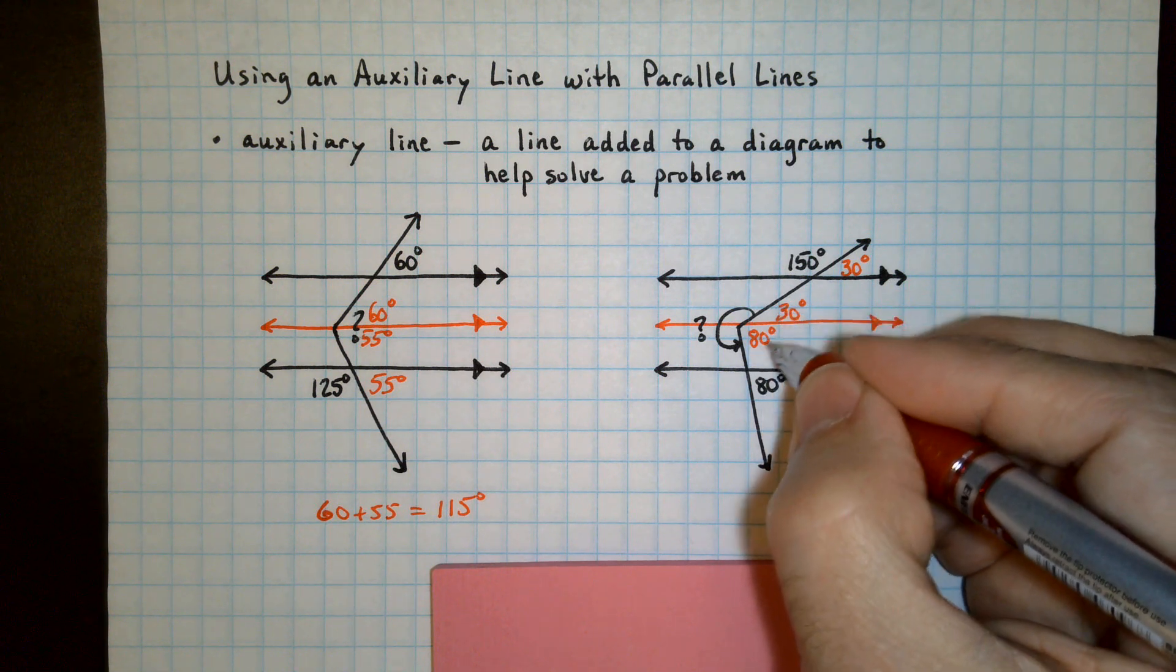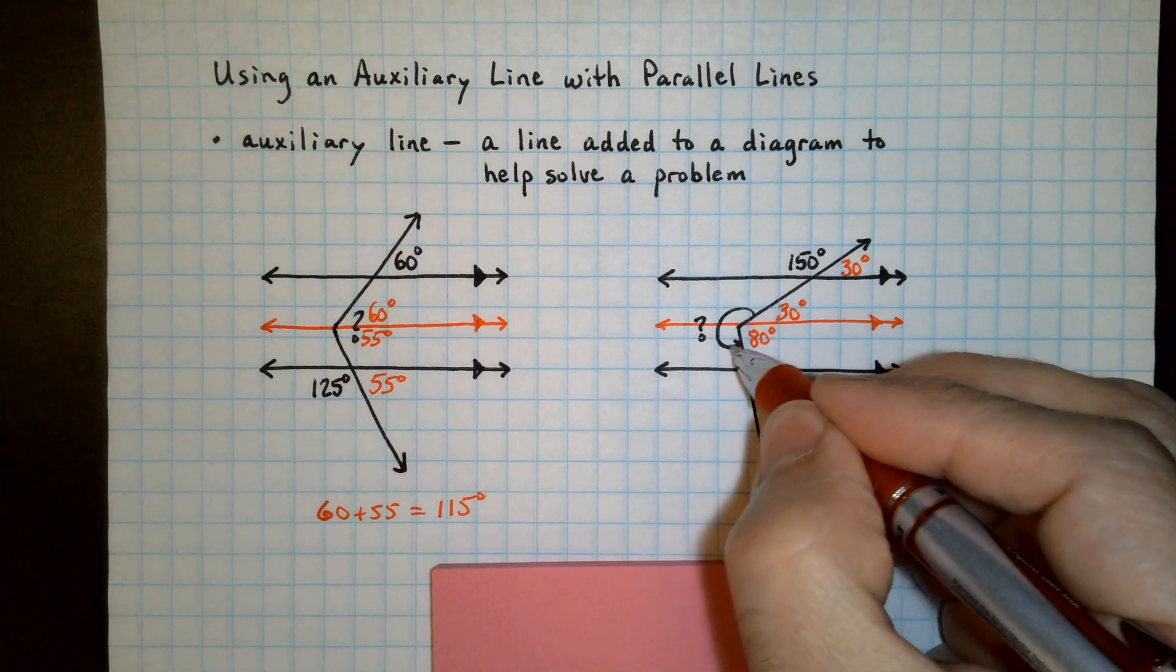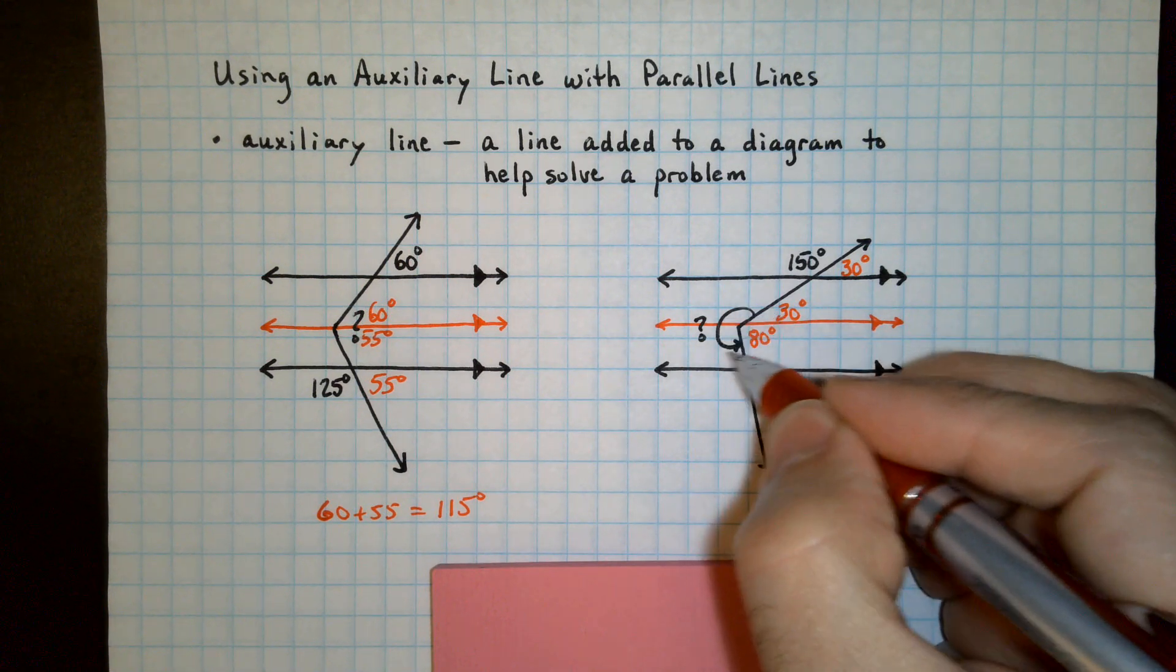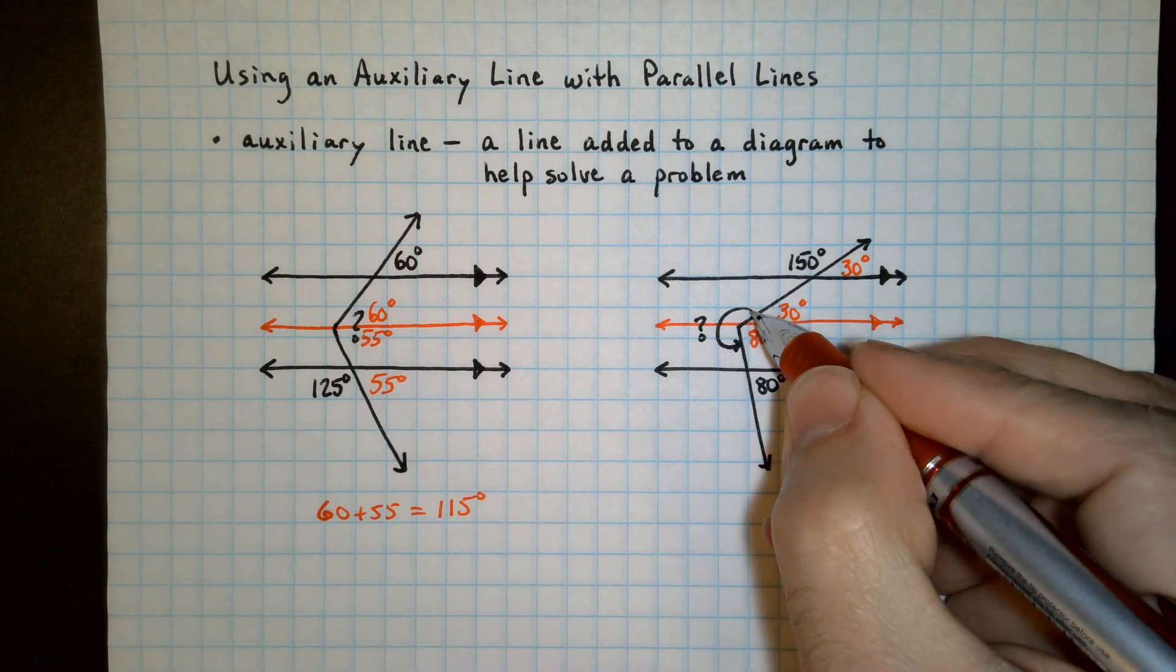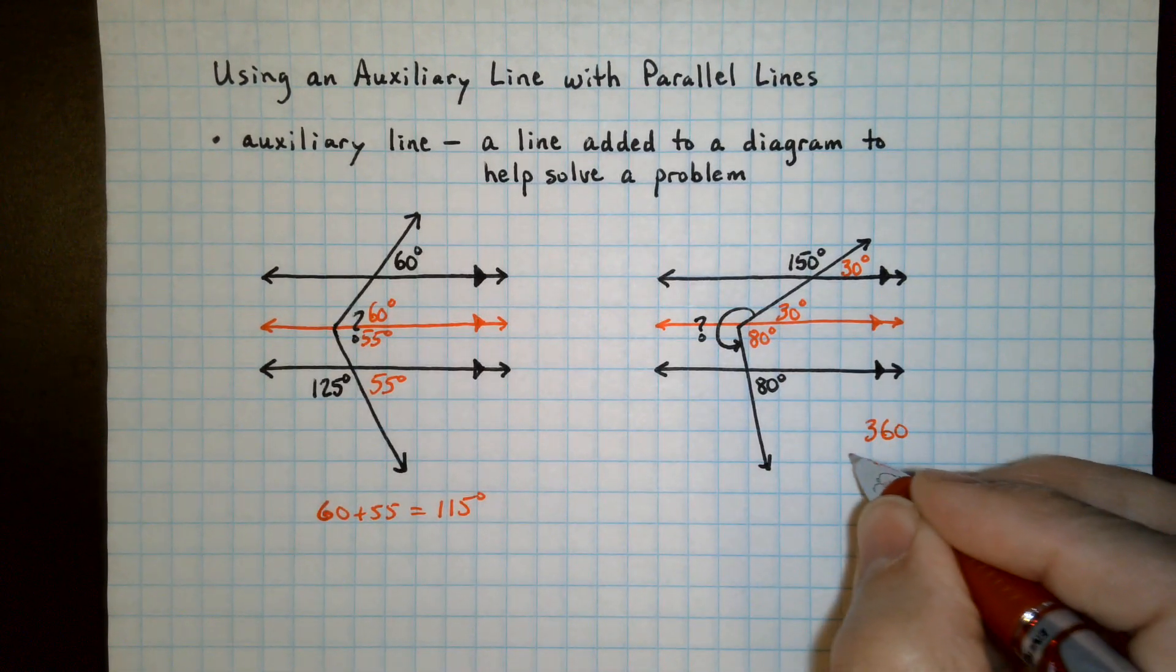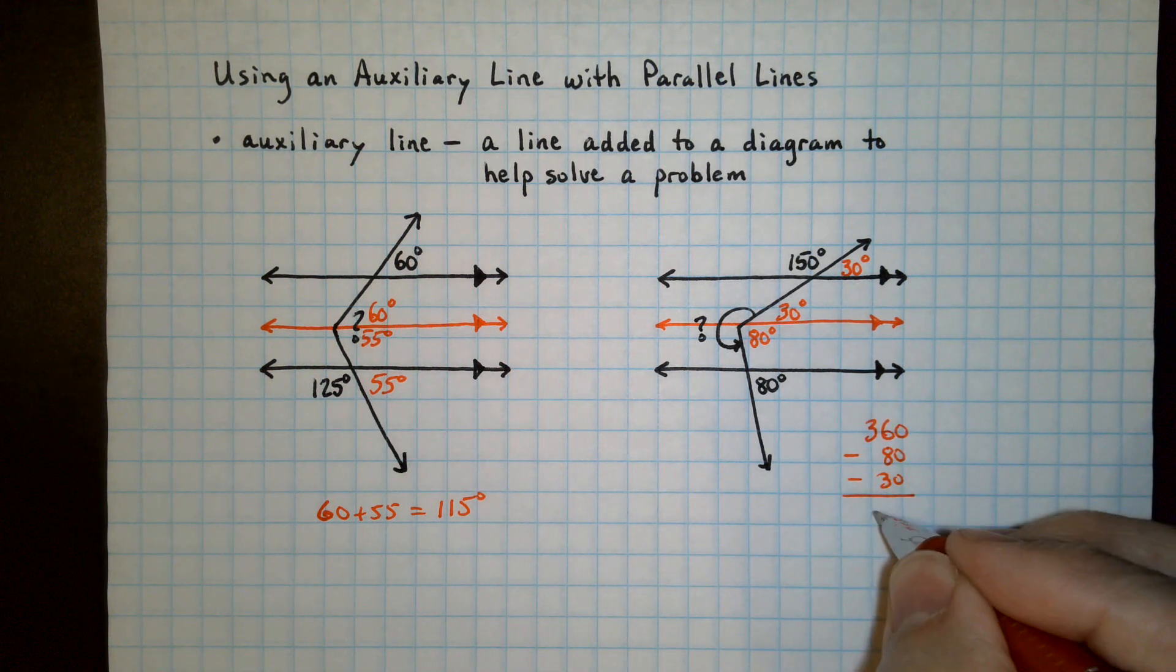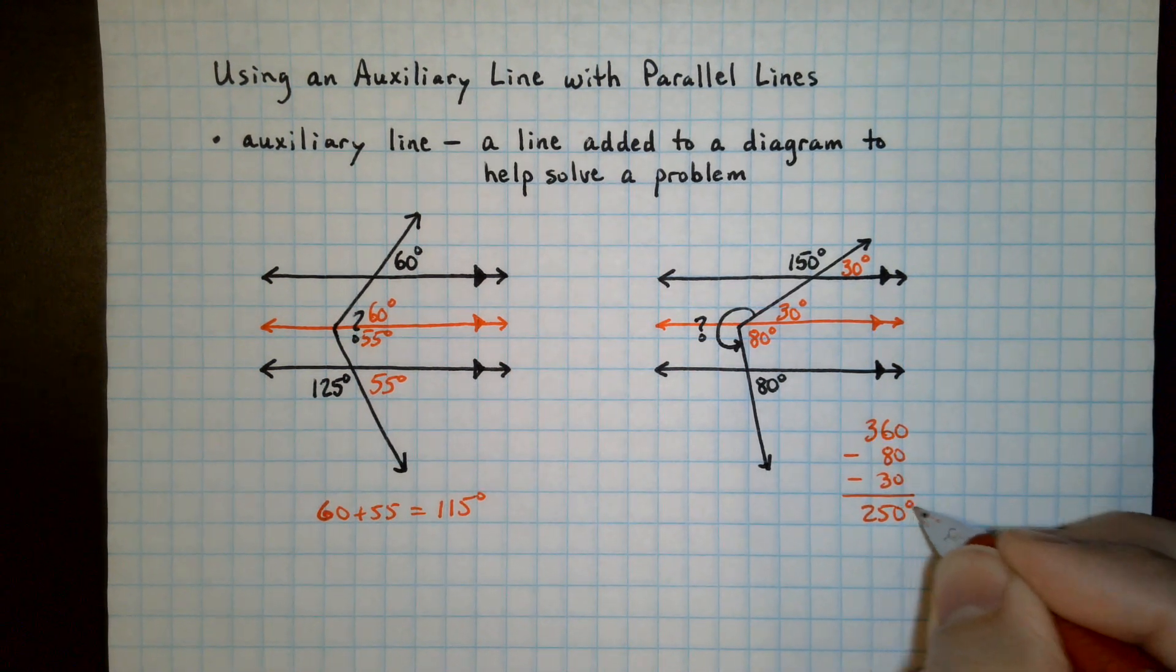So all together we have 110 degrees. But this example is asking for the angle on the outside here, the big angle. Well all the way around in a circle is 360. So we can take 360 and subtract the 80 and the 30 that were there. And that leaves you 250 degrees for this angle on the outside.